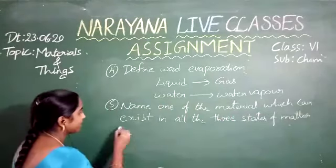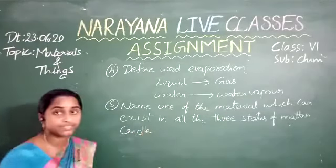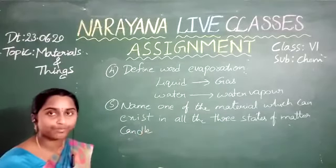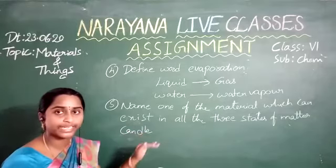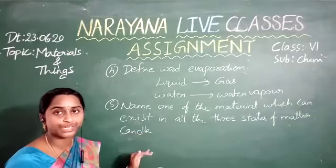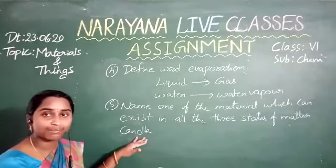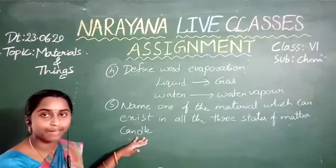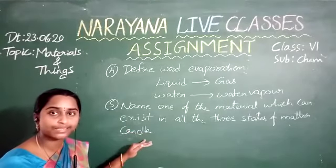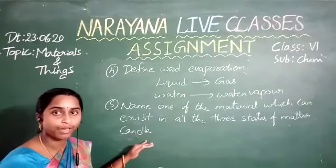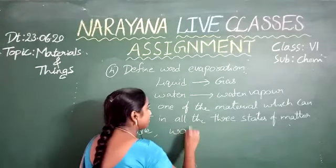Example: candle is an example — it can exist in solid form, liquid form when it melts, and on heating it can be converted into the gaseous form also. So candle can be taken as an example for a material which can exist in all the 3 states of matter.